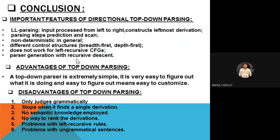Advantages of top-down parsing: it does not look at the right context in any systematic way, and its extreme simplicity is its great strength. It is very easy to figure out what it is doing. Disadvantages include backtracking, left recursion, left factoring, ambiguity, and problems with ungrammatical sentences. The conclusion of top-down parsing: parsing steps are prediction and scan; it is non-deterministic in general; and it uses a different control structure.